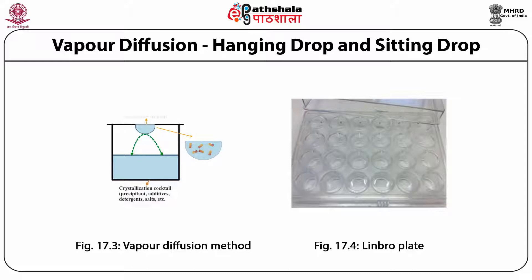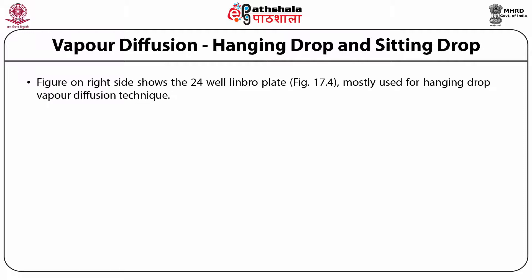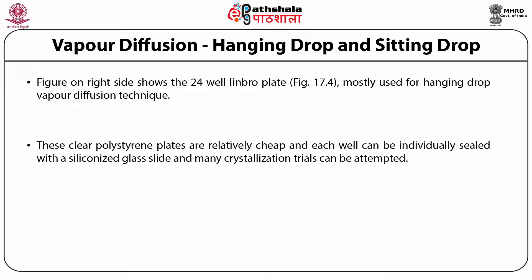The bottom arrow in figure 17.3 indicates the crystallization cocktail containing the precipitant, additives, detergents, salt, etc. Figure 17.4 shows a set of wells called Linbro plates, where in each well you can use a different protein crystallization setup by varying the parameters and marking them on the cover. The Linbro plate contains 24 wells and these are mostly used for hanging drop vapor diffusion technique. These plates are polystyrene plates, relatively cheap, and each well can be individually sealed with a siliconized glass slide so many crystallization trials can be attempted. The drops are easily observed under the microscope.